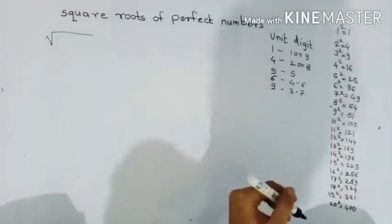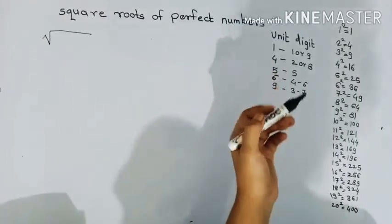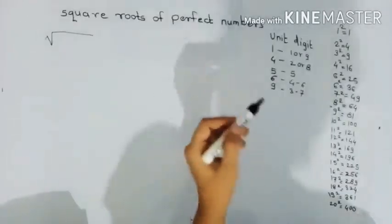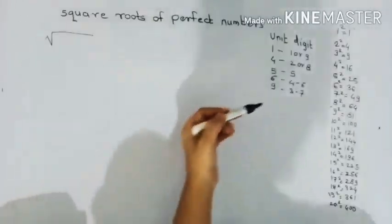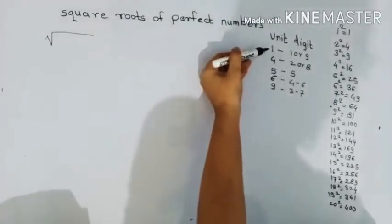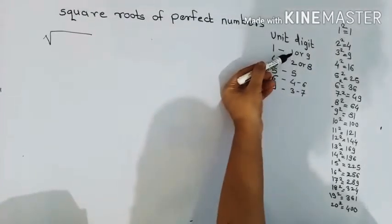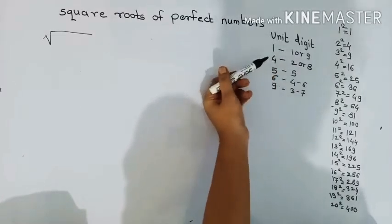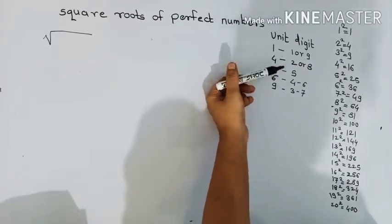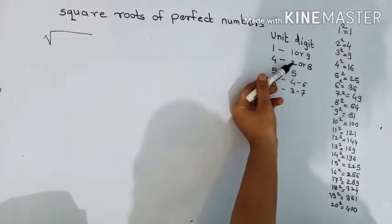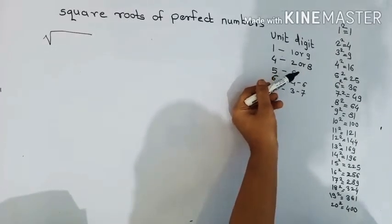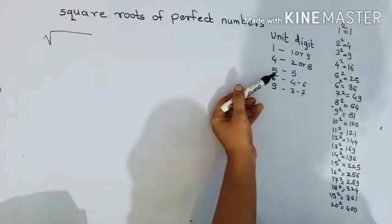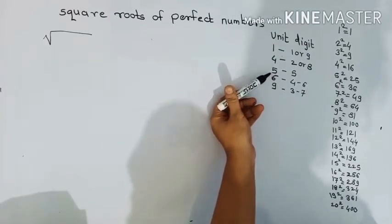Second thing is that if the unit digit is 1, then the answer will be the last digit. If the unit digit is 4, then the answer will be the last digit is 2 or 8.